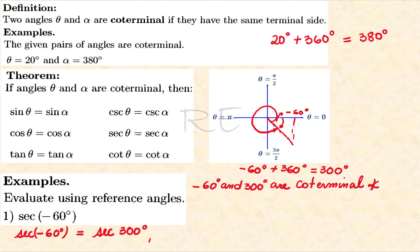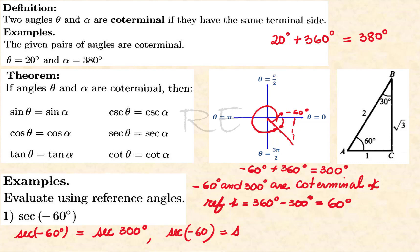The reference angle will be 360 minus 300, so secant of negative 60 is equal to secant of 60 degrees. Since secant is 1 over cosine and cosine is positive in the fourth quadrant, the answer will be hypotenuse 2 over the adjacent side 1.